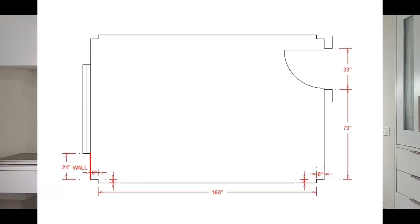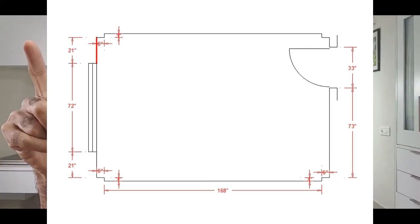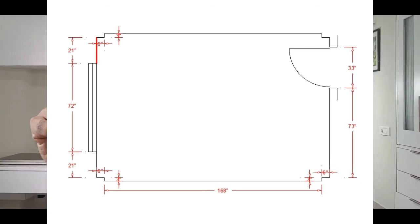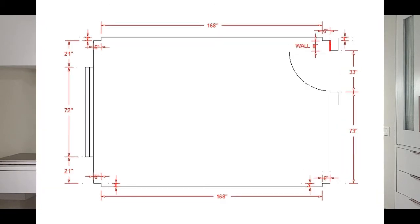Assuming after this column you have a wall up to the starting of the window, measure this length and write it on the plan. Then measure the width of the window including the frame, write it on the plan, and continue all the way around back to the door.